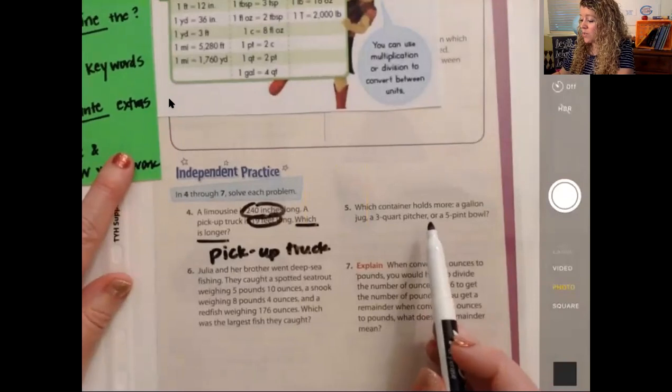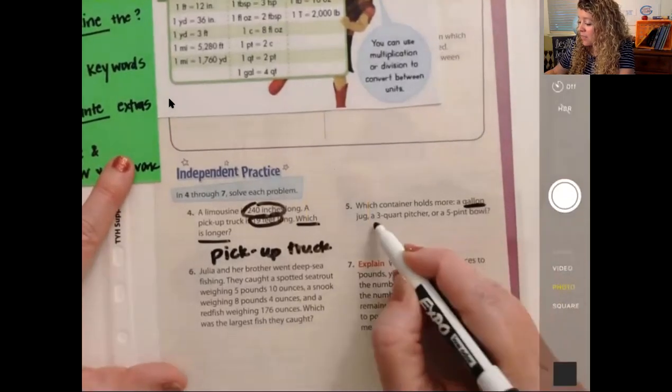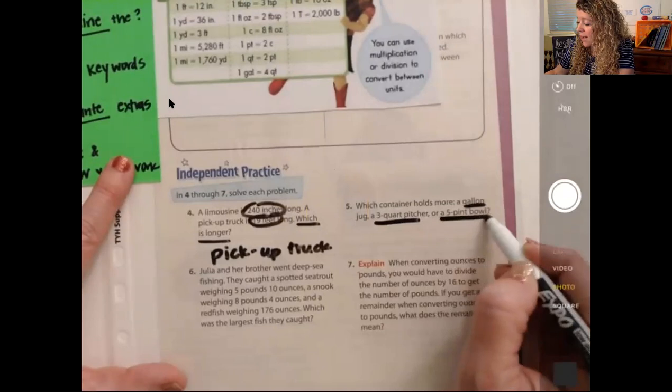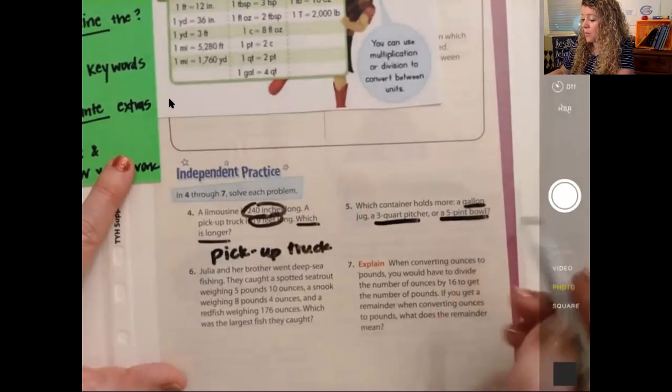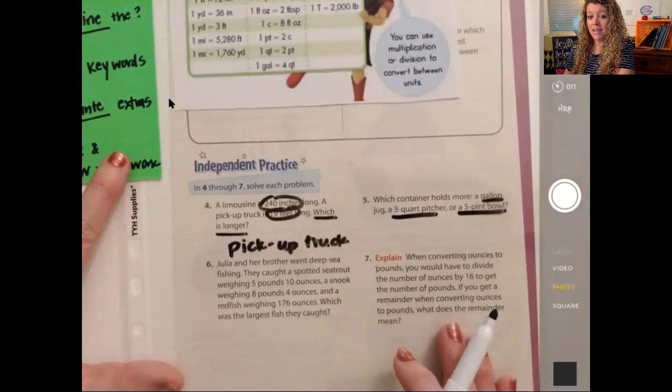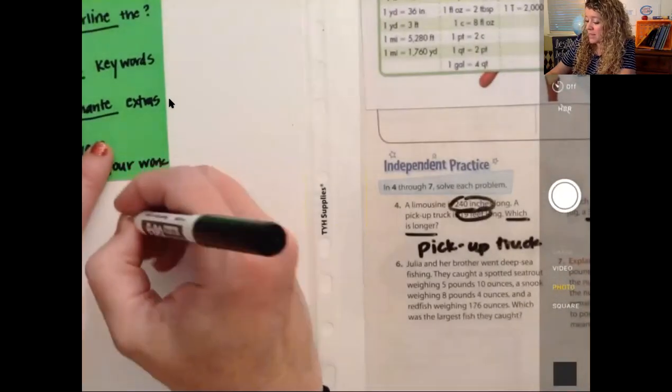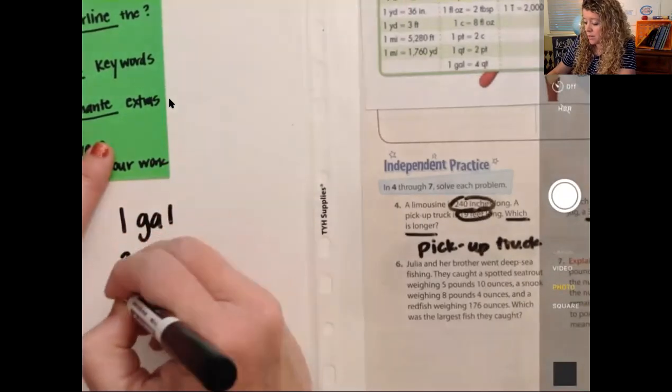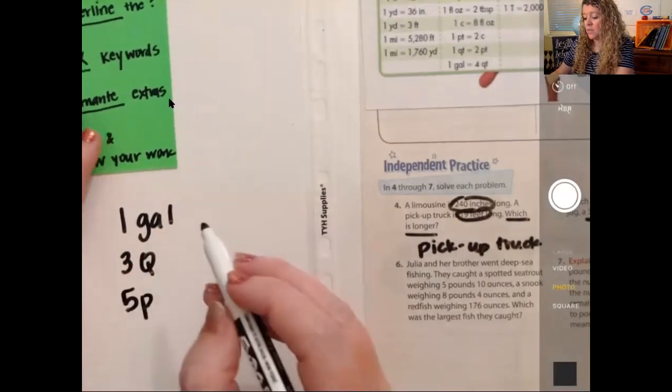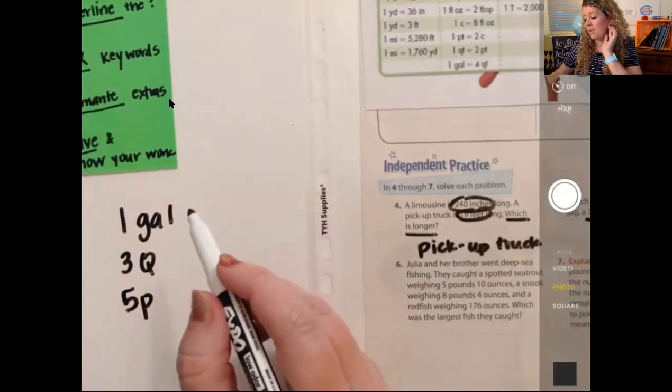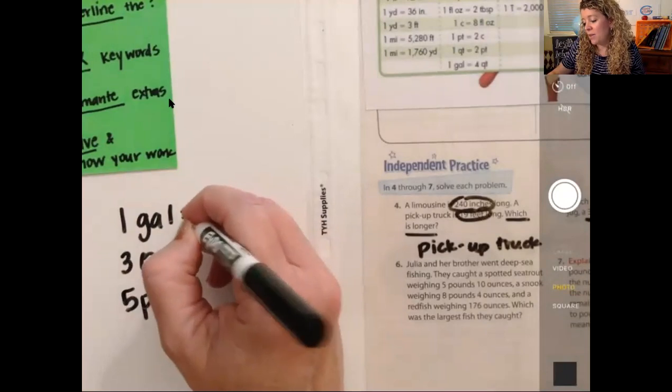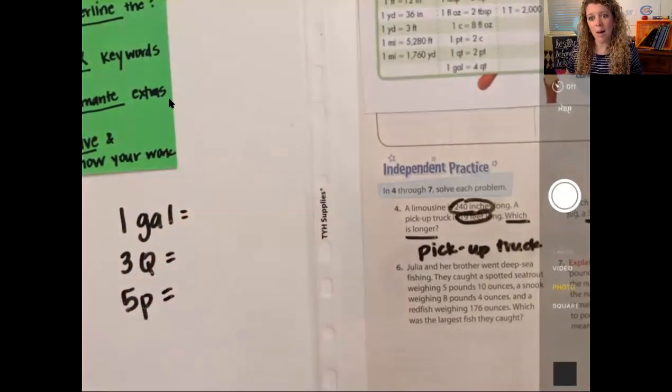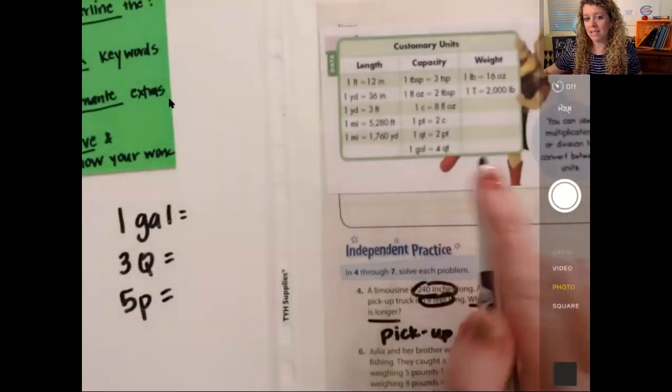Let's erase this work, and let's move on to number five here. Which container holds more? A gallon jug, a three-quart pitcher, or a five-pint bowl. Okay, so we're comparing one gallon, three quarts, or five pints. So what I would do on this one, I believe, is I think I would convert them all to how many cups are in each one. So let's look at our capacity units here.